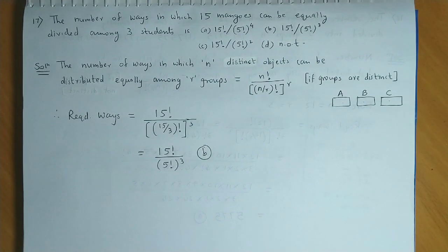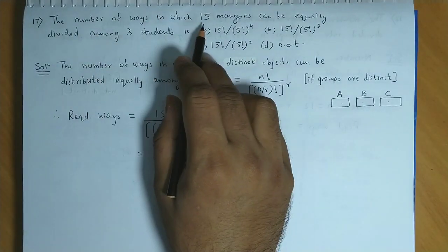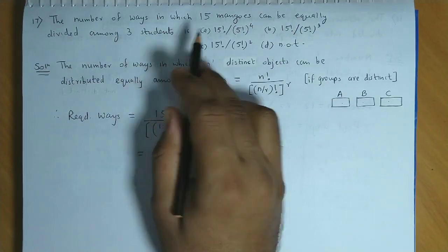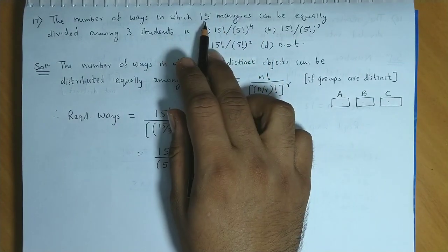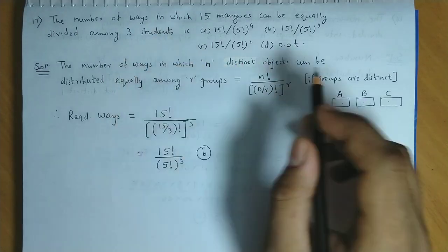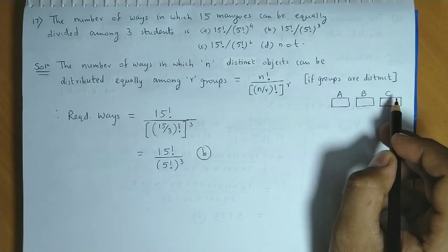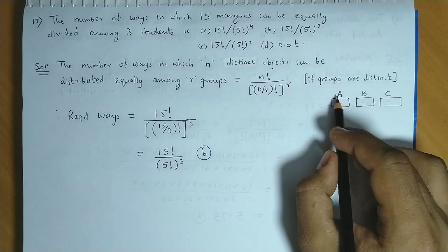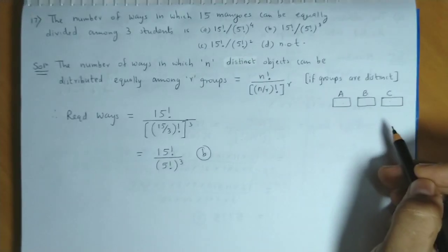Now let's discuss question number 17: The number of ways in which 15 mangos can be equally divided amongst 3 students. We have to distribute 15 mangos among 3 different students — say students A, B, and C. The students are obviously distinct from each other. So basically the groups are distinct here, and there is a shortcut formula for this.